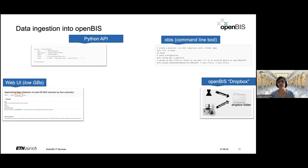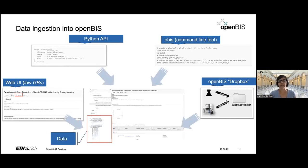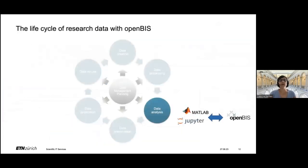For larger datasets, we recommend the openBIS dropbox — not to be confused with the commercial Dropbox service. This is a folder where you place your data, either manually or automatically, so data can be transferred directly from a measuring instrument to the dropbox folder. OpenBIS constantly monitors this folder, and whenever it finds data, that data is transferred to the final storage. In all cases, data ends up in openBIS attached to either an experiment or a sample.